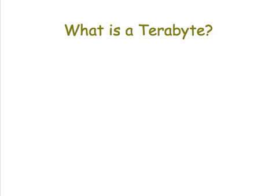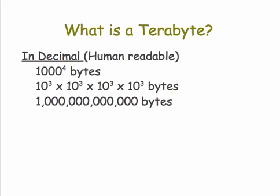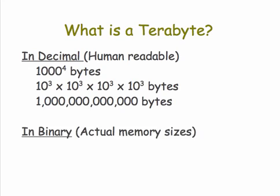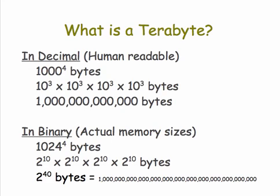So what exactly is a terabyte? In human-readable form, we say it's 1,000 to the 4th bytes — that's 10 cubed times 10 cubed times 10 cubed times 10 cubed — and written out with all those zeros, it's 12 zeros. In binary, the actual memory size, we say it's 1,024 to the 4th power of bytes, which is 2 to the 10th times 2 to the 10th times 2 to the 10th times 2 to the 10th, or 2 to the 40th bytes. Remember, you add these exponents when you're multiplying.